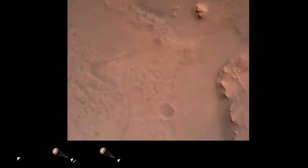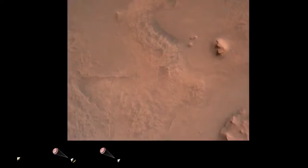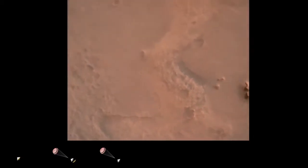Perseverance is continuing to descend on the parachute. We are coming upon the initialization of terrain relative navigation and subsequently the priming of the landing engines. Our current velocity is about 90 meters per second at an altitude of 4.2 kilometers.